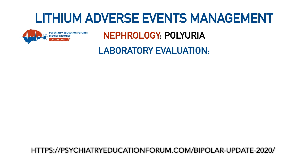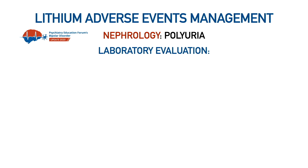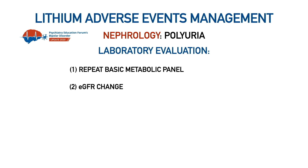Now let's go to laboratory evaluation. Let's say your patient presents with polyuria and polydipsia, or you accidentally found an abnormal kidney function on routine testing. What will you do? What will be your next step in those cases? The first step is always to repeat the basic metabolic panel to look at the serum creatinine and the eGFR, and when you repeat it, look at the changes in the eGFR level.